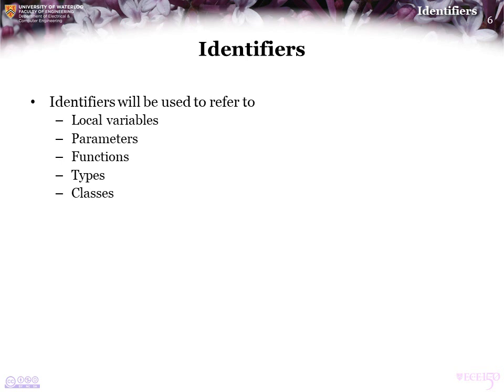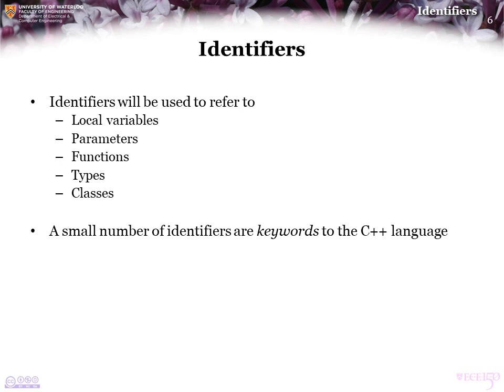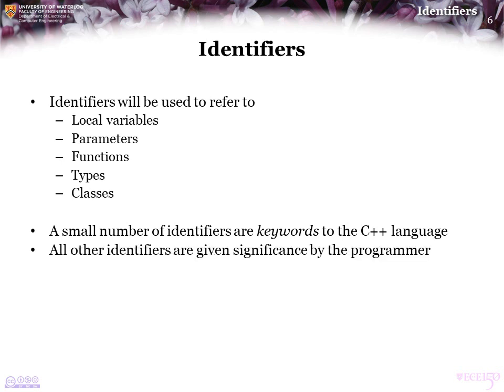In the upcoming weeks, we are going to use identifiers to refer to local variables, parameters, function names, types, and classes. Identifiers indicate something of significance. A small number of identifiers are keywords to the C++ language, which we'll cover later in this topic. For the most part, all other identifiers are given significance by the programmer — meaning something specific to the program at hand.